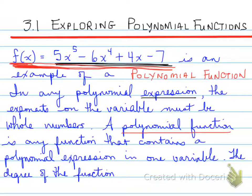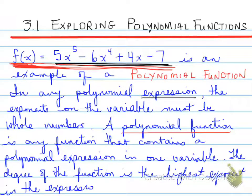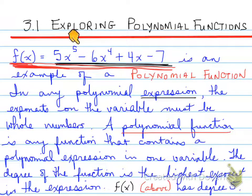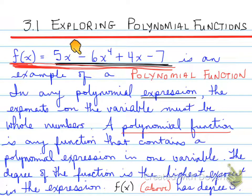The degree of the function is the highest exponent in the expression. For example, in the function f(x), it has a degree of 5, because looking at all of the exponents, the highest power is 5, so it's a degree of 5.